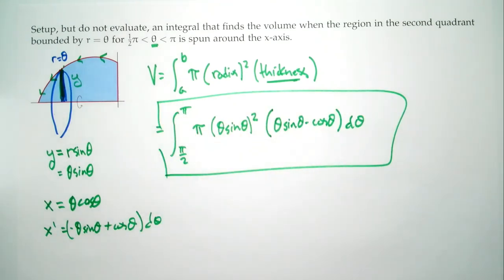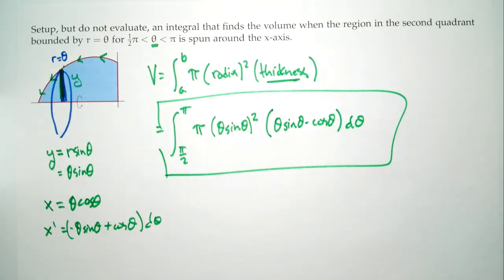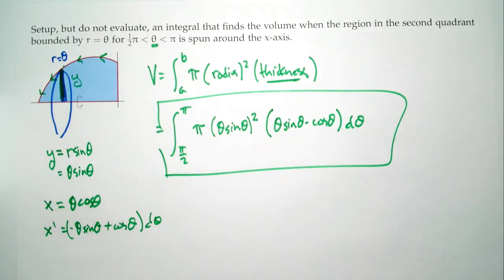The key takeaway is: look at which way the curve is traveling and introduce the minus sign accordingly. And with that, it looks like people are packing up, so we'll stop.